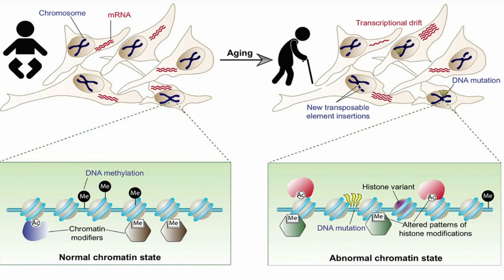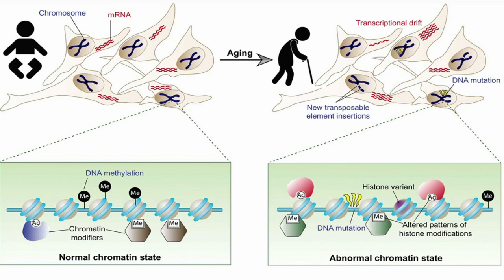The theory proposes that as cells divide and replicate, the genetic information is subject to errors such as mutations or epigenetic changes. These errors can accumulate over time, leading to a decline in the functioning of cells, tissues, and organs, which ultimately results in aging. The theory also suggests that aging may be a form of error catastrophe, in which the accumulation of errors in the genetic code reaches a critical point, leading to a decline in the overall functioning of the organism.